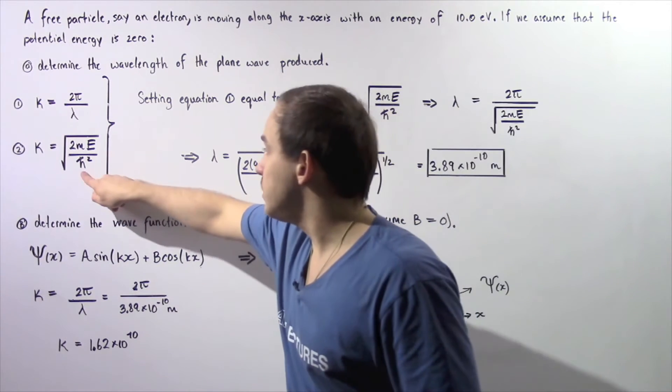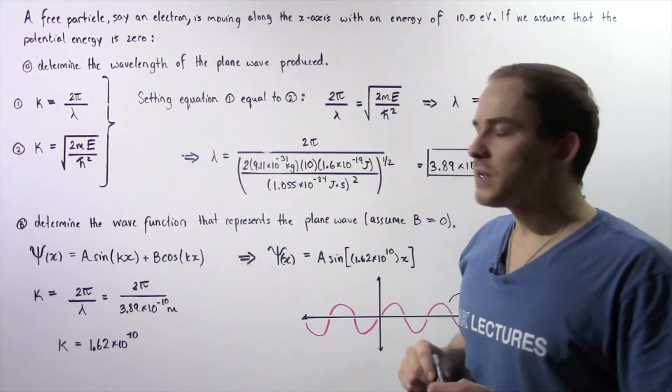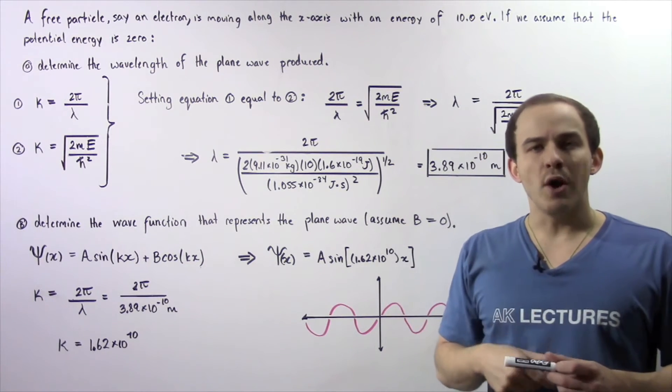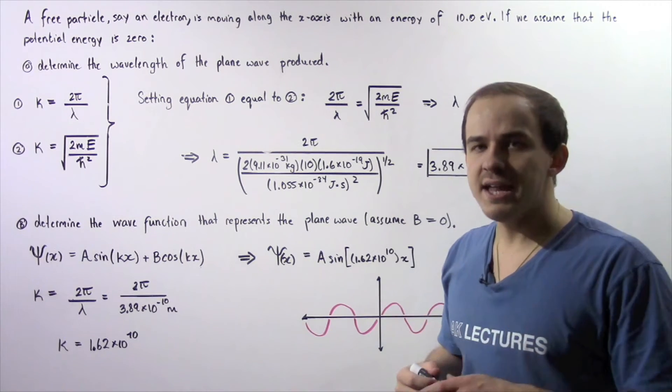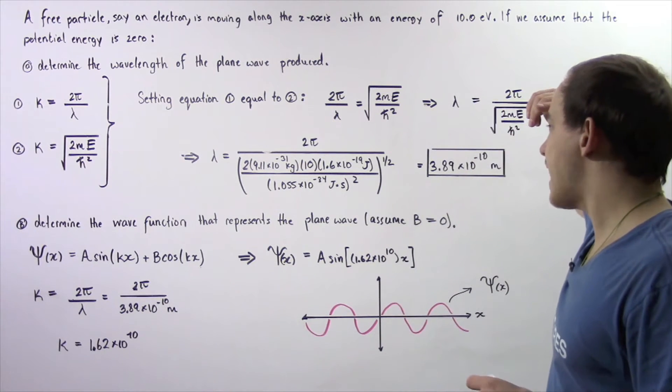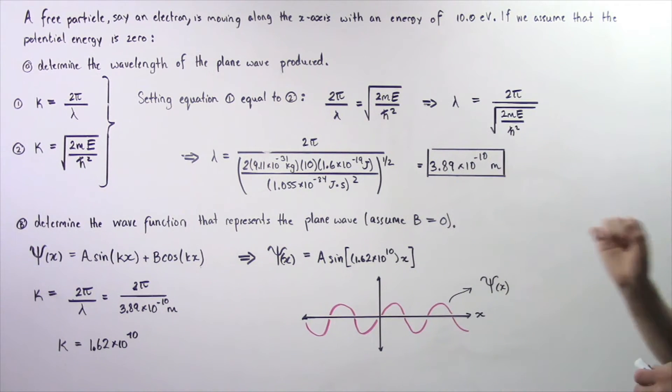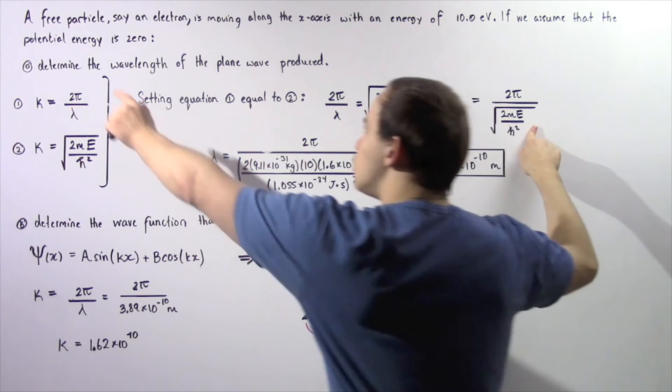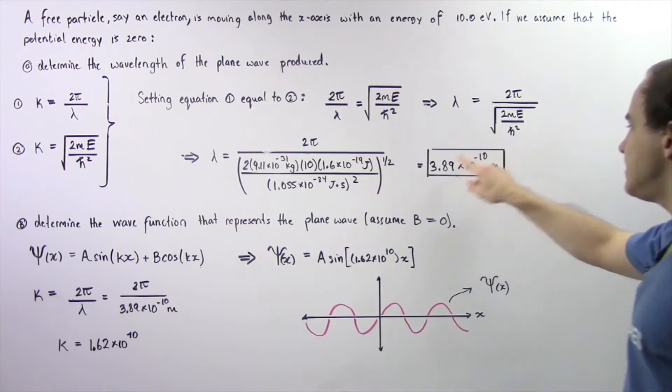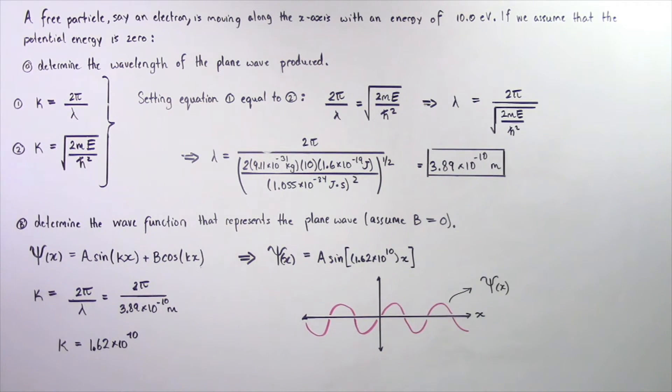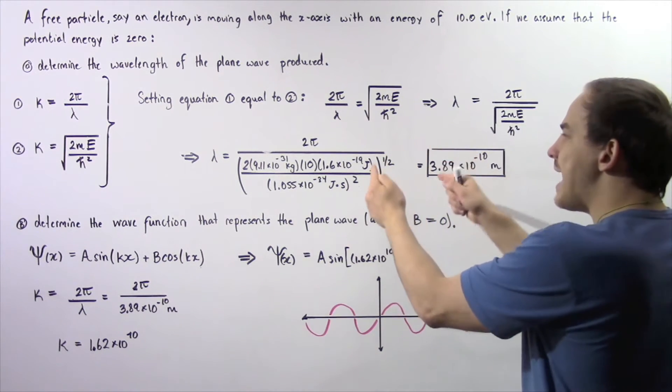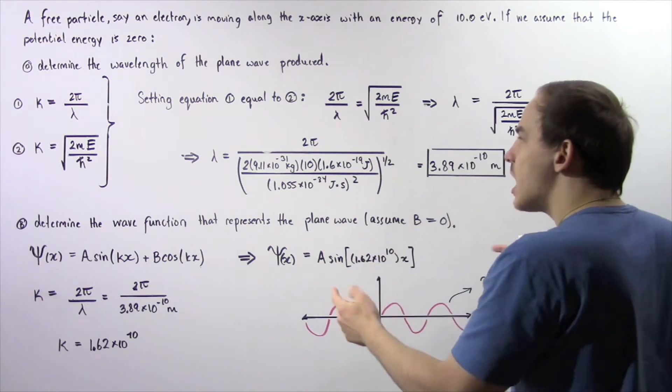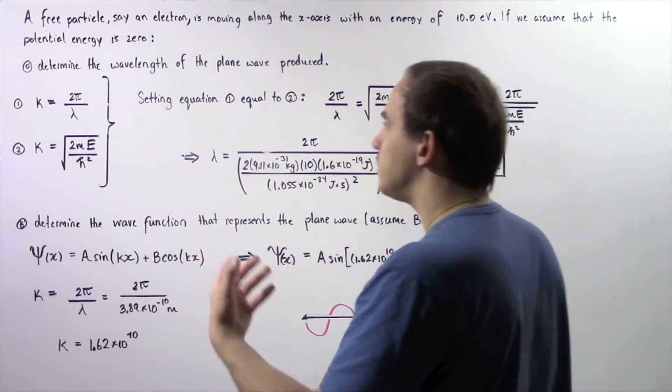And we also need the quantity that represents ℏ, which is equal to 1.055 times 10 to the negative 34 joules multiplied by second. So we plug in those values into this equation and we get that the wavelength of our plane wave produced by the free particle is equal to 3.89 times 10 to the negative 10 meters. This is the distance between any two consecutive crests of our sinusoidal plane wave.